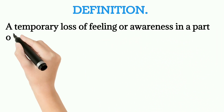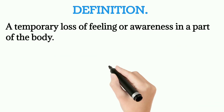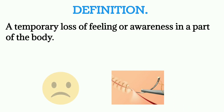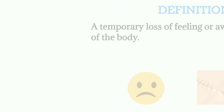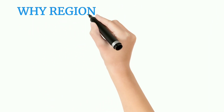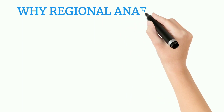Definition: Regional anesthesia is a temporary loss of feeling or awareness in a part of the body. The key word is 'temporary' — the loss of feeling is regional, meaning it affects only a specific area.